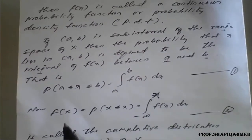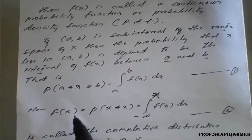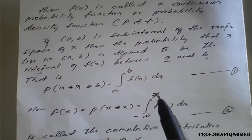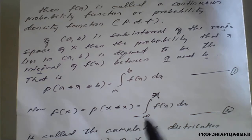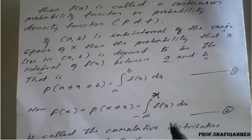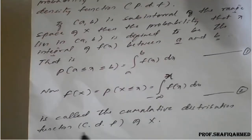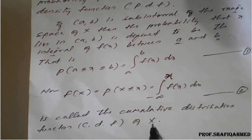The capital F(x) is defined as the integral from minus infinity to x of f(x) dx, meaning for X less than or equal to x. This is called the cumulative distribution function, or CDF, of the variable X.